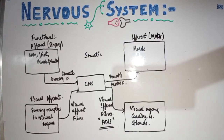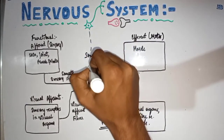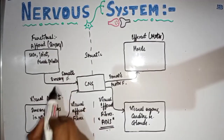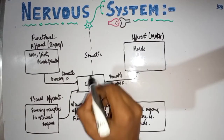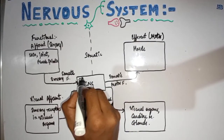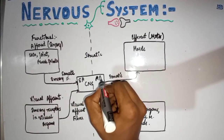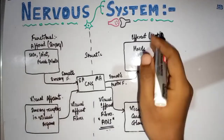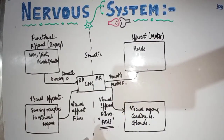The nervous system is divided into two parts according to functional classification: afferent and efferent fibers. In the anatomical classification we separated CNS from PNS, but here the CNS and PNS are integrated. The sensory areas of the CNS are considered in the afferent part, and the motor areas are considered in the efferent part.